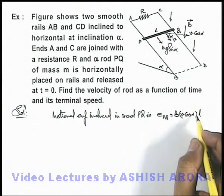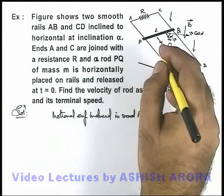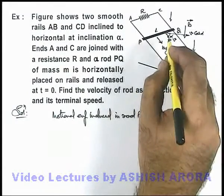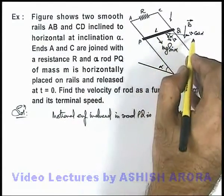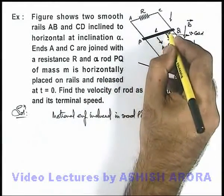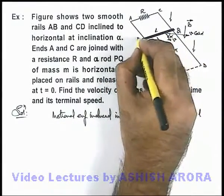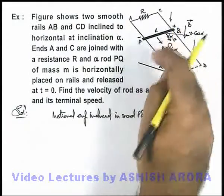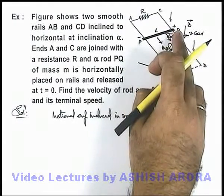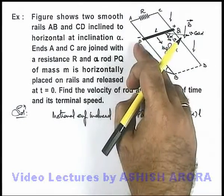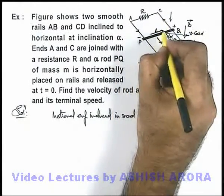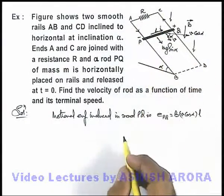By the right-hand palm rule, we can see that magnetic induction is in the downward direction and velocity is toward the right. In this situation, the free electrons of the rod will move towards P, so the direction of induced EMF is such that point Q will be at high potential and P will be at low potential, due to which a current i starts flowing in the rod and in the circuit of resistance.